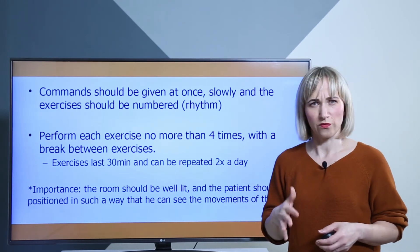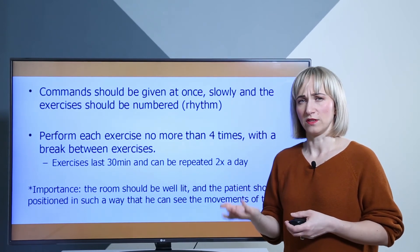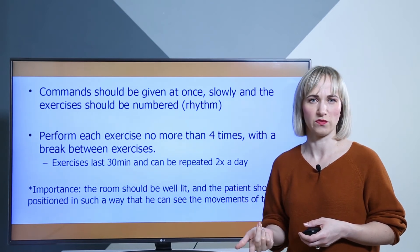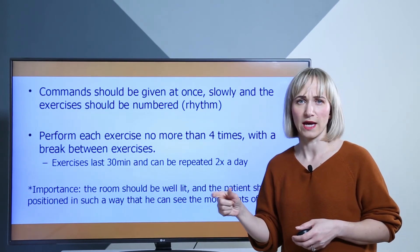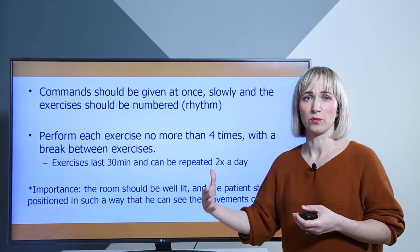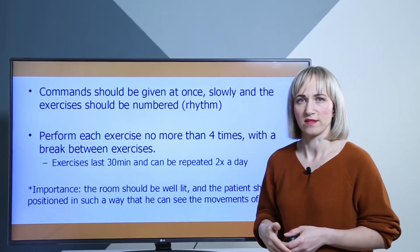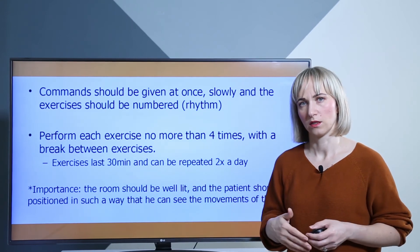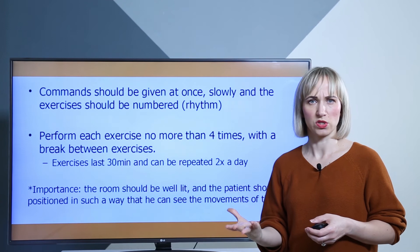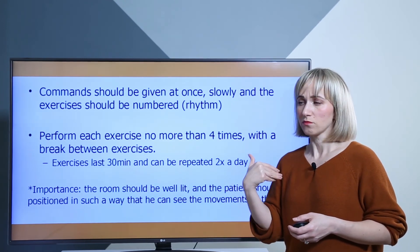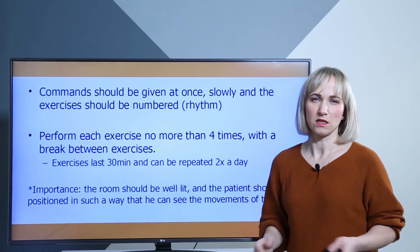Each exercise should be performed no more than four to a maximum of ten repetitions. We must be careful because the patient fatigues quickly — exceeding repetitions makes it very difficult to continue. It is better to keep fewer repetitions, maintain a short program, and repeat it in the afternoon or the next day. The maximum program duration should be 30 minutes, repeated twice a day. The room should be well-lit so the patient can see his limbs, and exercises in front of a mirror are recommended.